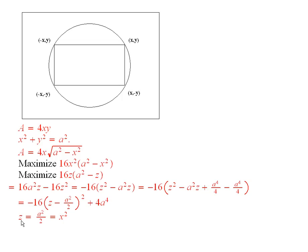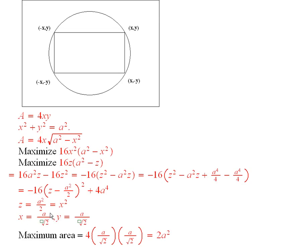But remember, z was chosen to equal x squared. So x equals a over the square root of 2. And then if you take that special value of x and place it here in the original relation, you find that y also has to be a over the square root of 2.